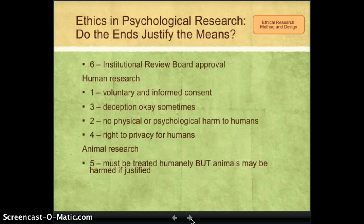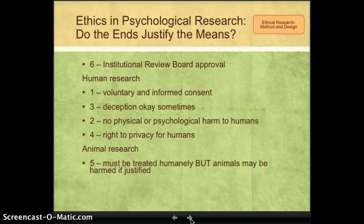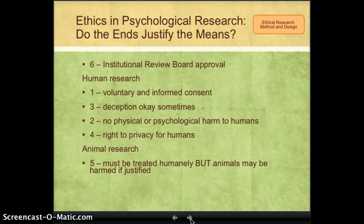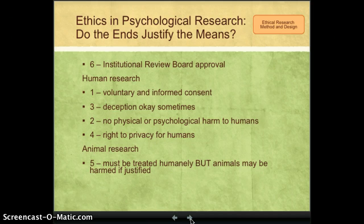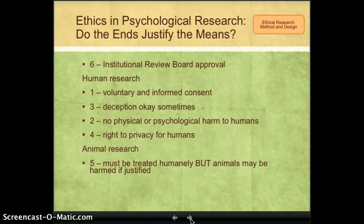These guidelines are presented in a slightly different order than in the textbook, where they are numbered one through six. I like to start with number six because this is actually the first thing all scientists must do if they are doing research with people or animals. This guideline has to do with getting approval of the research study before it is conducted from an Institutional Review Board. All psychological research has to be approved by a board, usually at the institution where the scientists work. In the case of Jefferson College, a scientist would go to the Jefferson College Institutional Review Board to have their study approved before they began.